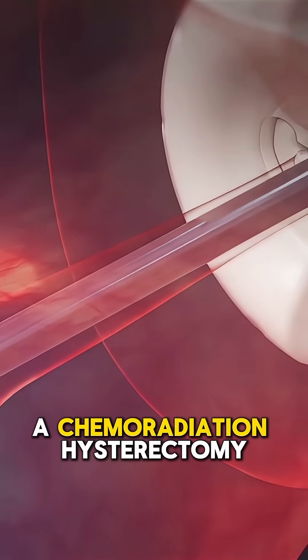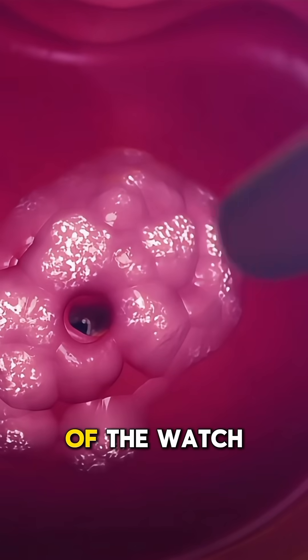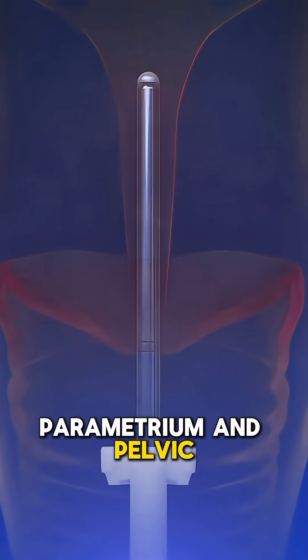In more advanced cases, a radical hysterectomy is done involving the removal of the entire uterus, cervix, part of the vagina and surrounding tissues, parametrium and pelvic lymph nodes.